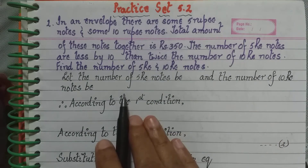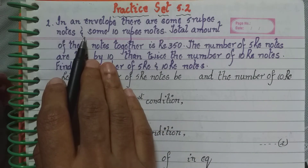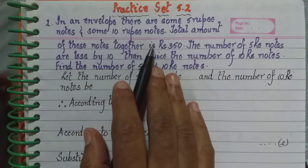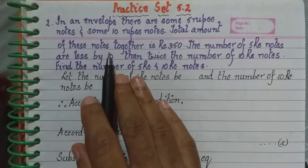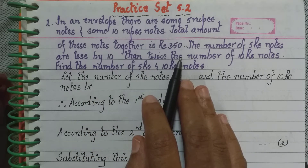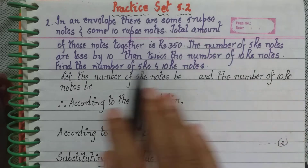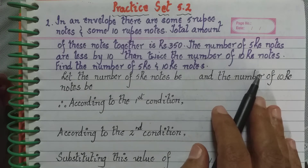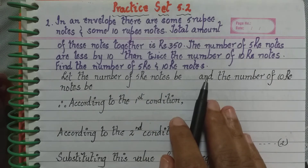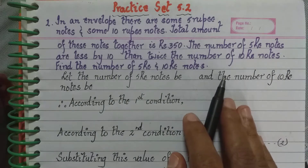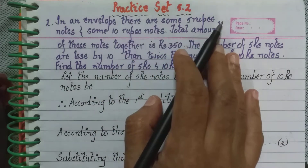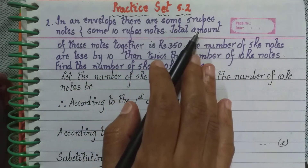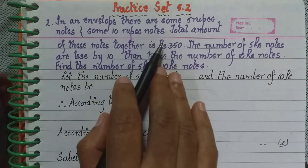Let's find out what is asked. Look at the first question. It says that in an envelope there are some 5 rupee notes and some 10 rupee notes. The total amount of these notes together is 350 rupees. The number of 5 rupee notes are less by 10 than twice the number of 10 rupee notes. We have to find the number of 5 rupee notes and 10 rupee notes. They have not told us exactly how many of each there are.